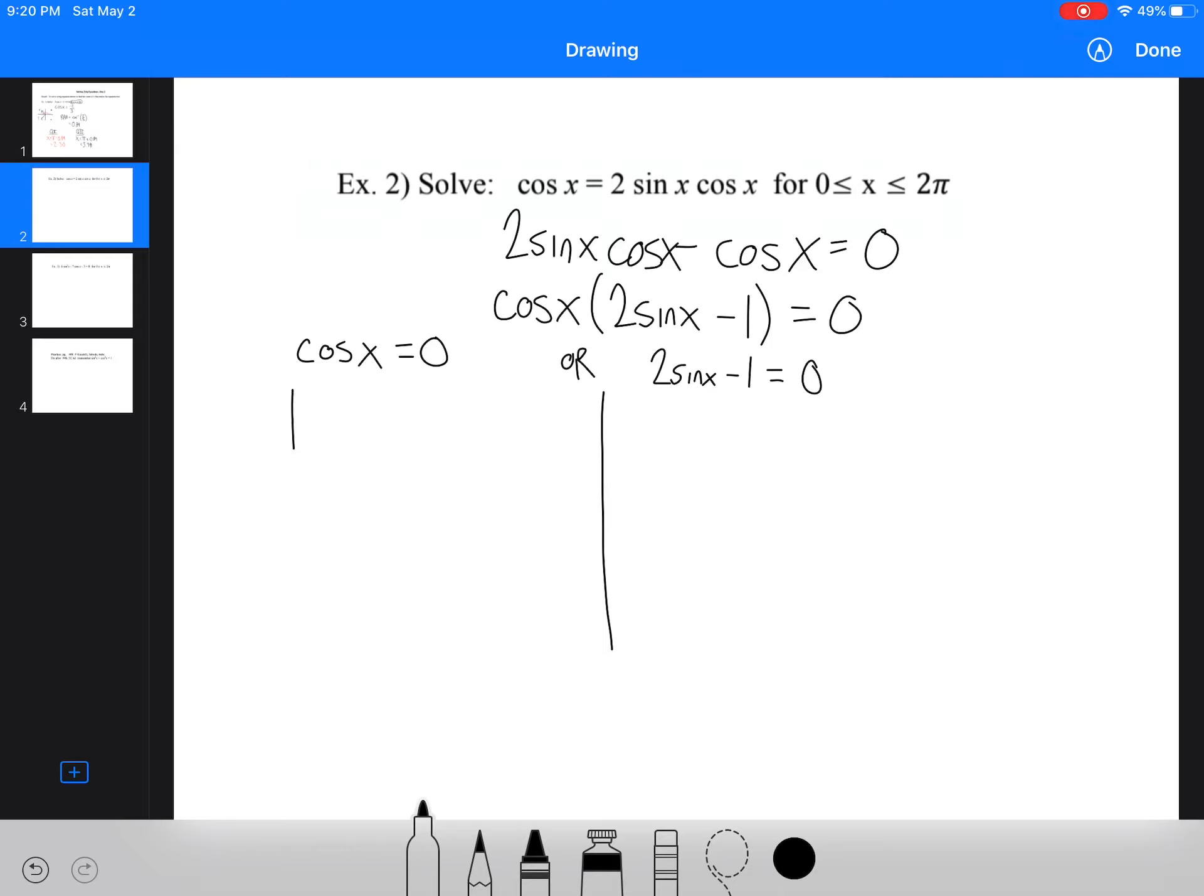So what that actually means is that on here, we're right there. Cos x equals 0. We're actually right here as well. Cos x equals 0. If you go back to your unit circle, cos x equals 0 when x equals 0. So when x equals 0, cos x equals 0.